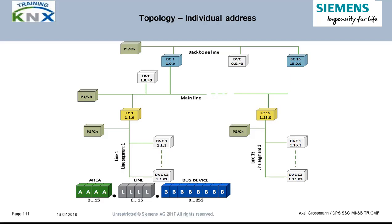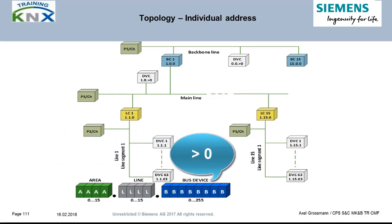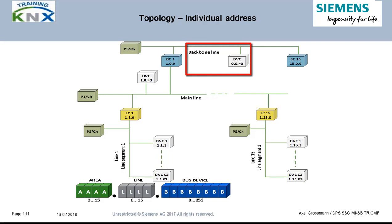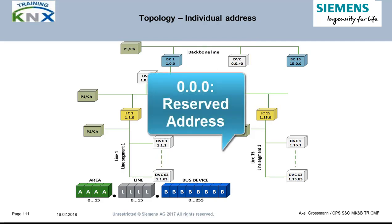We can now see the concrete individual addresses as they would be used in a network structure. All regular bus devices on sub-lines have addresses with each part greater than 0. Subscribers on the main lines bear their area number plus line number 0 and a device number between 1 and 255. On the area line, all device individual addresses start with 0.0, and regular devices also have numbers between 1 and 255.